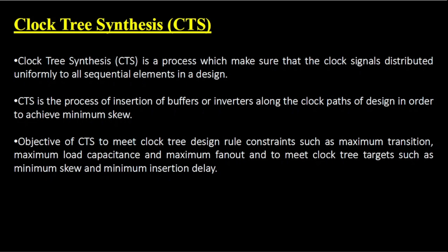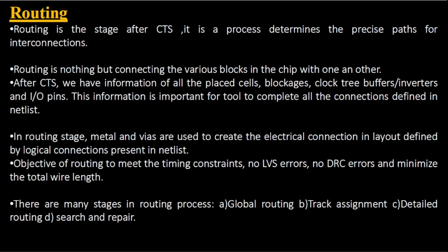Then we move to the routing stage. Routing is the process to determine the precise path for interconnections. Routing is nothing but connecting the various blocks in the chip with one another. After CTS, we have information of all placed cells, blockages, clock tree, buffers and inverters, and IO pins. This information is important to complete all the connections defined in the netlist. In the routing stage, metal and vias are used to create the electrical connections in the layout as defined by the logical connections present in the netlist. The objective of routing is to meet the timing constraints, no LVS error, no DRC error, and to minimize the total wire length.